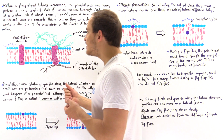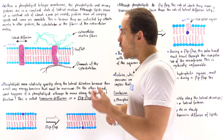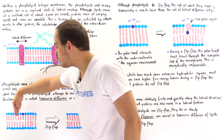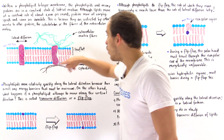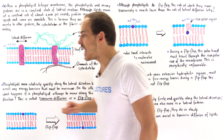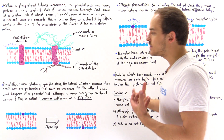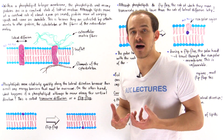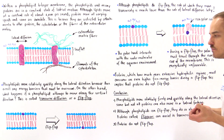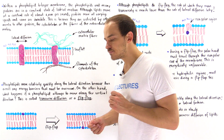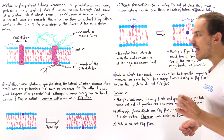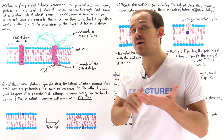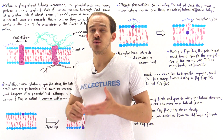But suppose instead of moving along the lateral direction, one of these phospholipids wants to actually rotate and move from one side of the membrane — one leaflet — to the other side, the opposing leaflet. This process is known as transverse diffusion, or simply flip-flopping. Do phospholipids actually flip-flop? The answer is yes, but flip-flopping doesn't take place at the same rate as lateral diffusion. In fact, lateral diffusion takes place much more quickly than transverse diffusion.